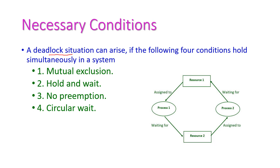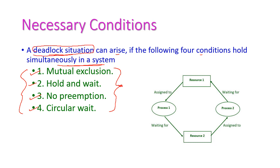The deadlock situation can arise if the following four conditions hold simultaneously in the system. The four conditions are: first, mutual exclusion; second, hold and wait; third, no preemption; and fourth, circular wait. If these conditions arise in any computer system, then there is a possibility of deadlock.